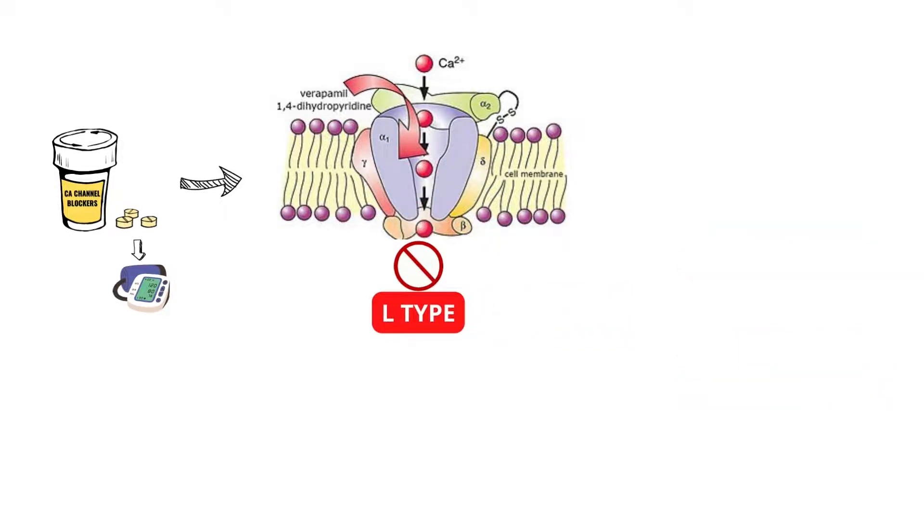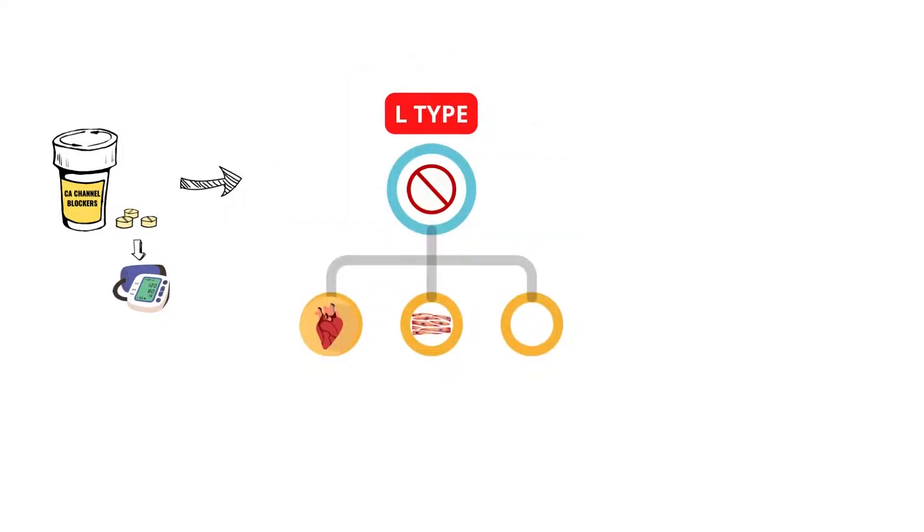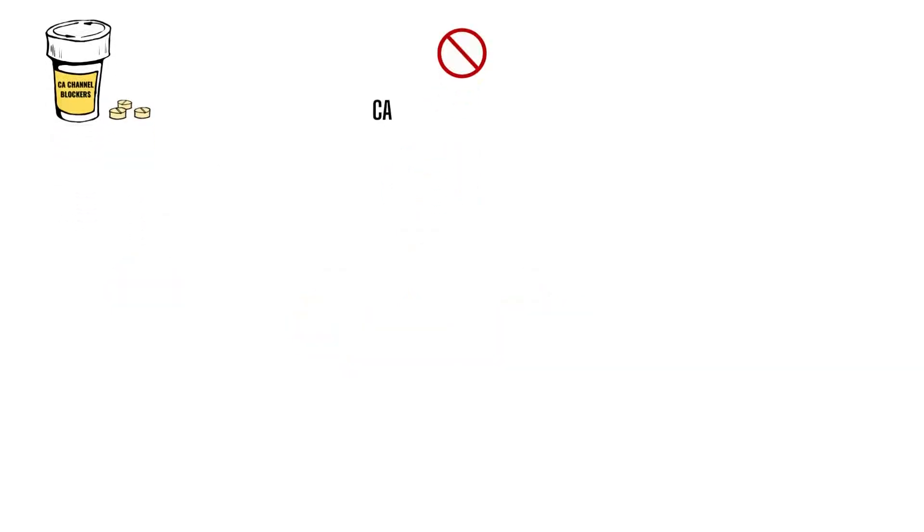Calcium channel antagonists bind to the L-type long-acting voltage-gated calcium channels found in the heart, vascular smooth muscle, and pancreas to prevent calcium from moving inward. Based on their main physiological actions, calcium channel antagonists are divided into two main types.